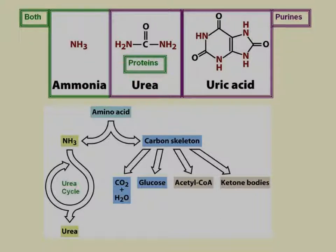Urea comes from only proteins, and uric acid comes from only purines. You can see the double ring structure typical of a nucleotide, especially a purine. All three of these are forms of nitrogenous waste — this is how we get rid of nitrogen in the body.